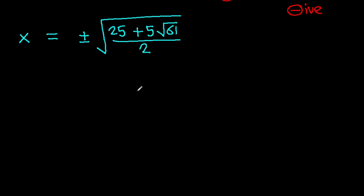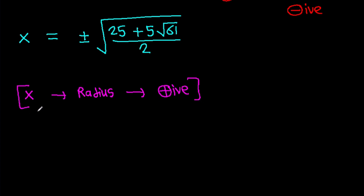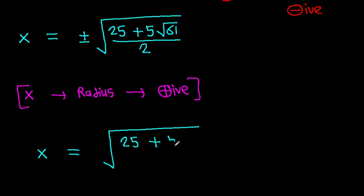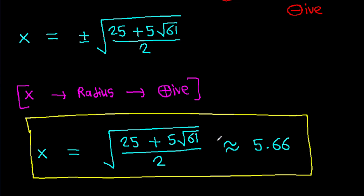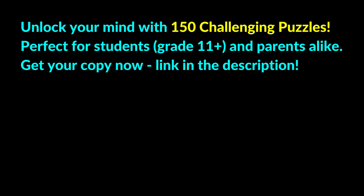Since X is the radius, it should be positive. So X equals √[(25 + 5√61) over 2], which is approximately equal to 5.66.